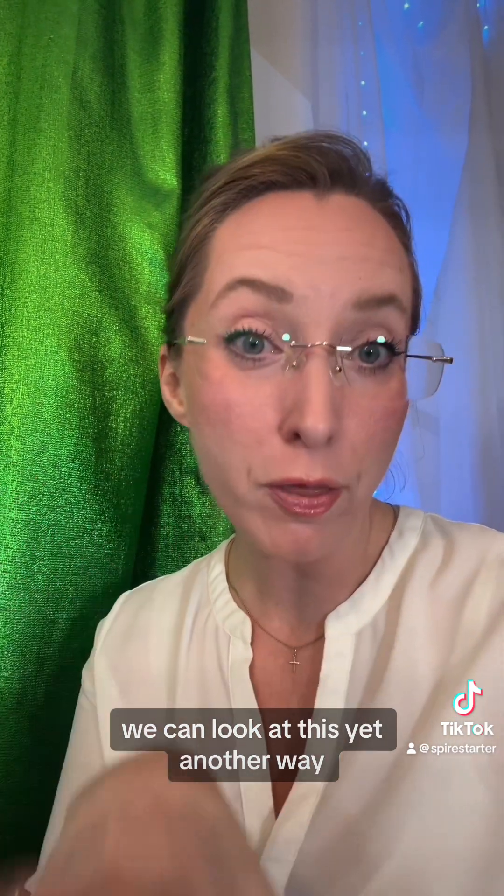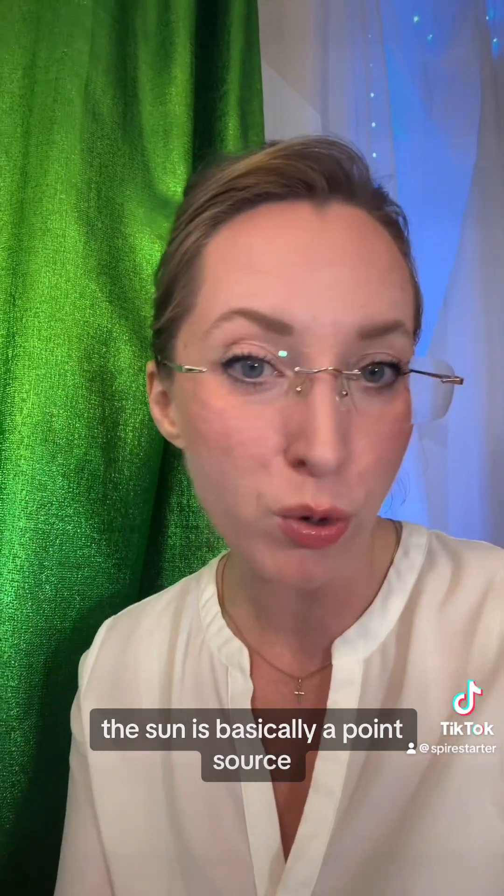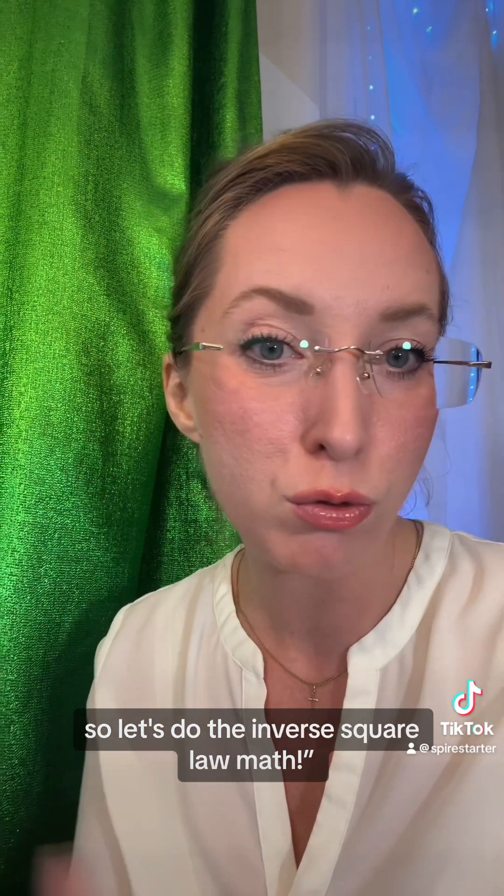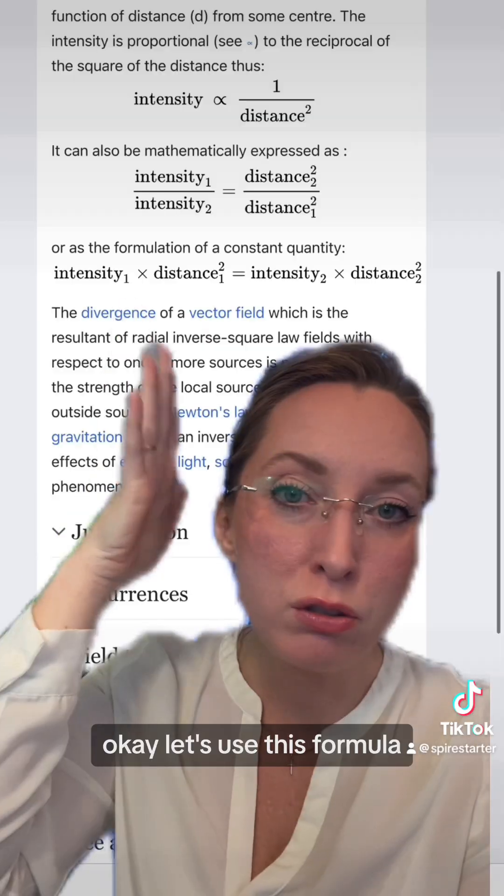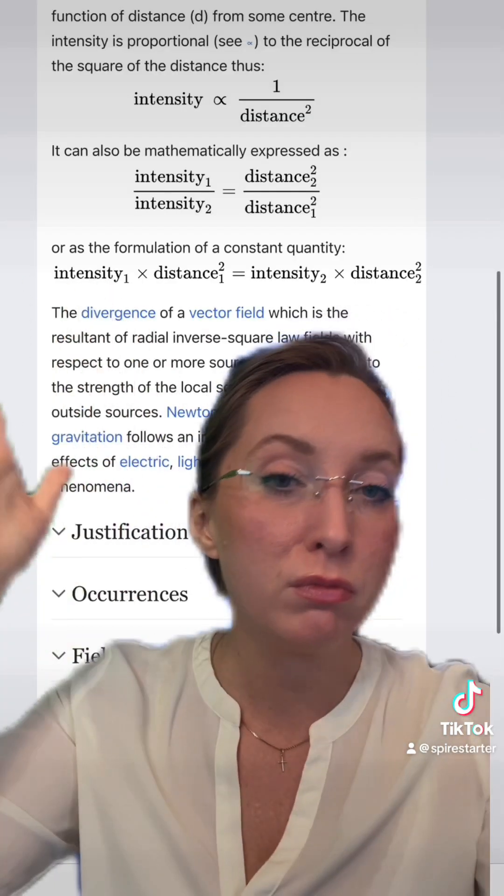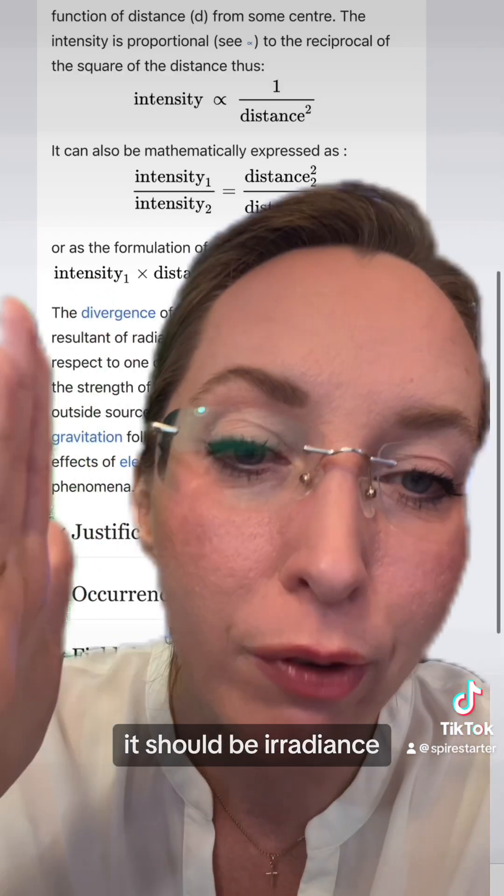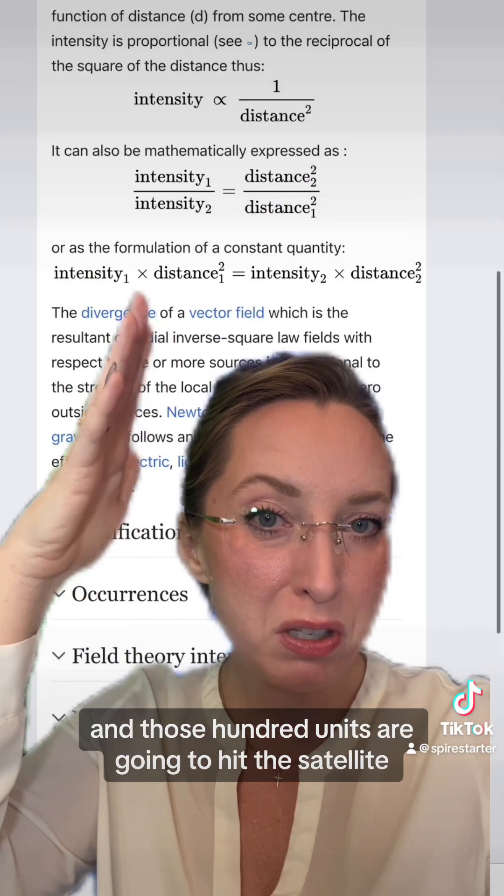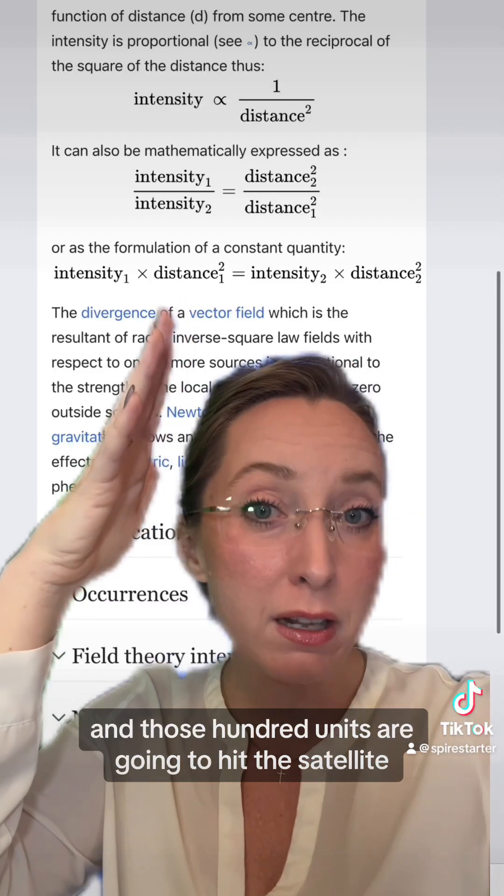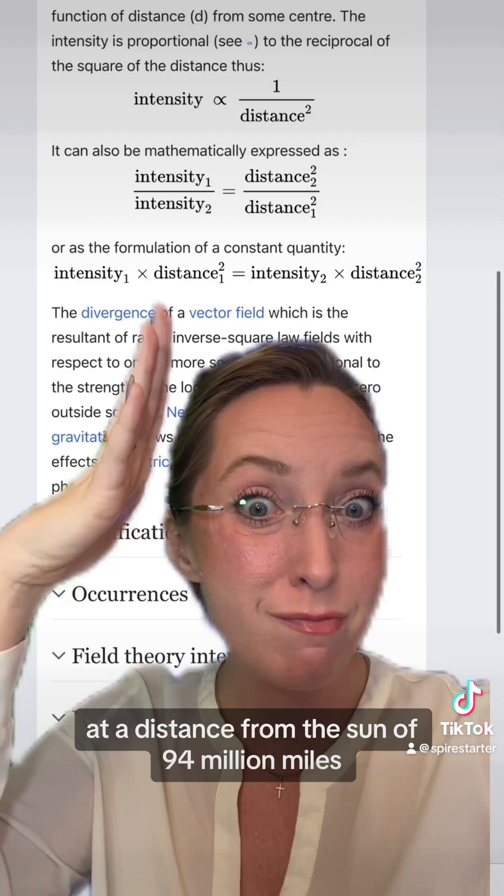We can look at this yet another way if you still are like, no Erin, the sun is basically a point source, so let's do the inverse square law math. Okay. Let's use this formula. We'll say that we have a hundred units of intensity, which should be irradiance. And those hundred units are going to hit the satellite at a distance from the sun of 94 million miles.